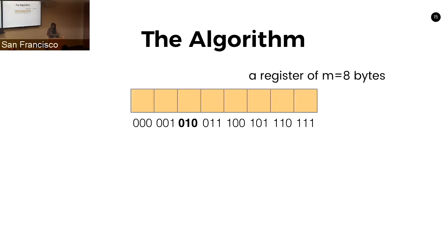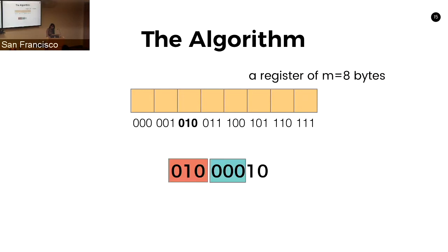Now the actual algorithm: you initialize a register of m bytes — here there are eight bytes and eight buckets. Given a number from the stream, you grab the first log-base-2 of eight bits, so the first three bits, and select a bucket within the bit vector. You bucket the first three bits — so you pick 0, 1, 0 on your vector.